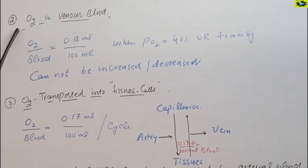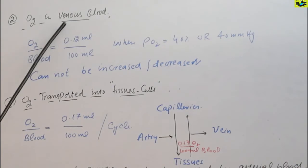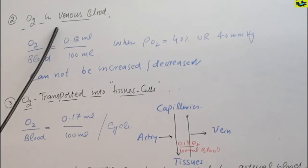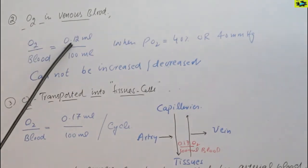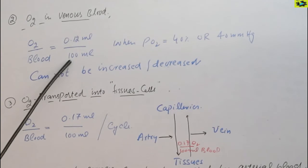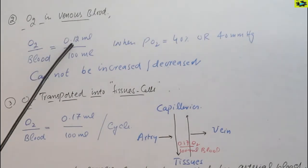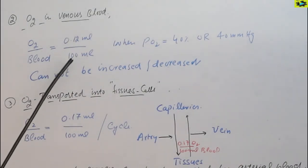Here is the oxygen in the venous blood. In the venous blood, about 0.12 ml oxygen is present inside the 100 ml of blood. Why this value is lesser than that of the arterial blood? Because here carbon dioxide is greater than that of the oxygen. Therefore the value is lesser than that of the arterial blood.